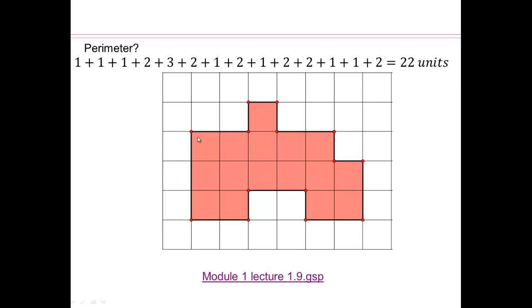Does that make sense? So you have 3, 4, 5, 6, 7, 8, 9, 10, 11, 12, 13, 14, 15, 16, 17, 18, 19, 20, 21, 22. So you can always check.